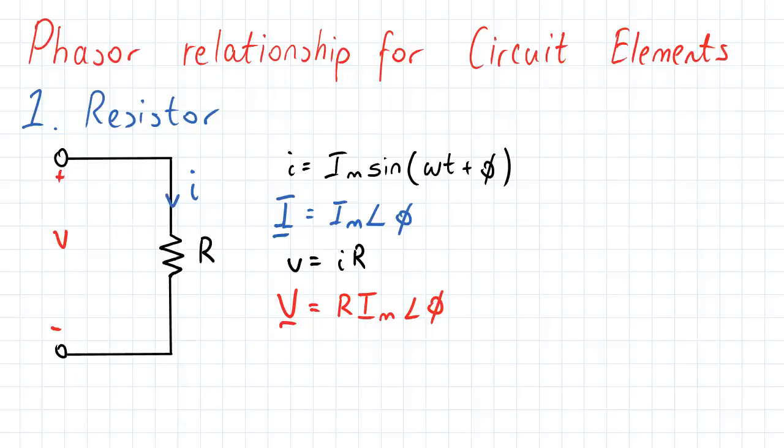So in the resistor, what we have for AC circuits is our current is equal to I m sin omega t plus phi, or basically our I vector is equal to I m with an angle of phi.